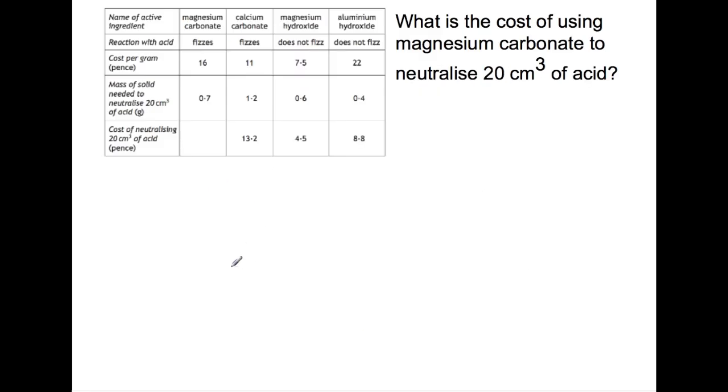Here's another question which looks like you need to know about chemistry to be able to answer this numeracy question. However you don't really. So you've got a table here which tells you about the different active ingredients in a tablet, how they react with acid, how much they cost per gram.